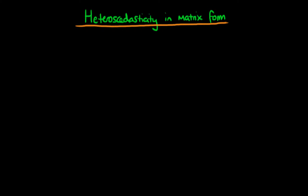In this video I want to explain how we can represent heteroscedasticity in the matrix formulation of econometrics. That's going to lead on to, in the next few videos, a discussion of how one can form BLUE estimators in the presence of heteroscedasticity and how we can represent those in matrix form.